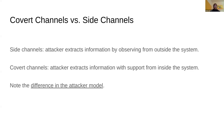It's just a difference in the attacker model. With side channels, the attacker aims to extract information by observing from outside the system — for example, observing the power consumption of a running algorithm. But with covert channels, the attacker has the same goal of extracting information, but it additionally has support from inside the system. There's basically a colluder, which is why it's a stronger attack.